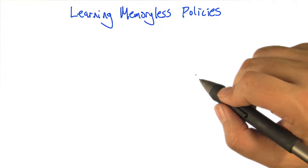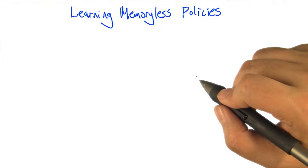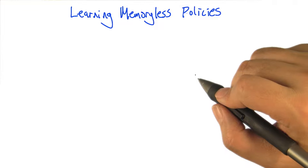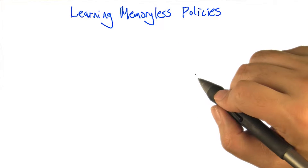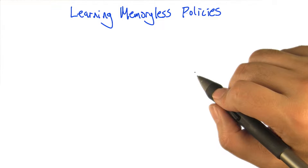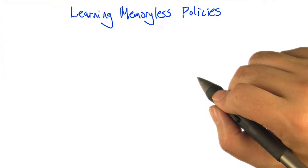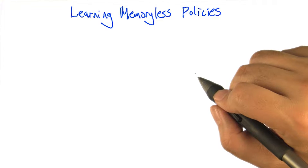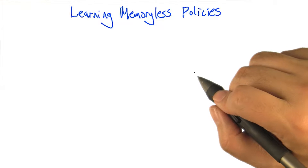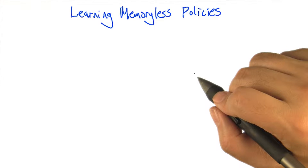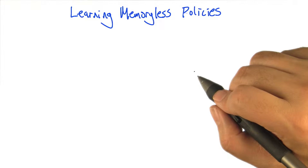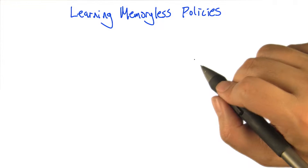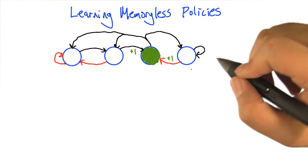That was all we were going to say about model-based reinforcement learning in POMDPs. Now we're going to talk a little bit about model-free reinforcement learning in POMDPs. In particular, we're going to focus on memoryless policies. What I'd like to show is not so much about learning, but more about planning.